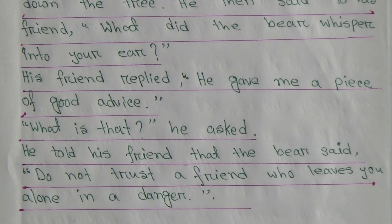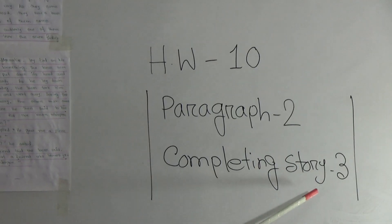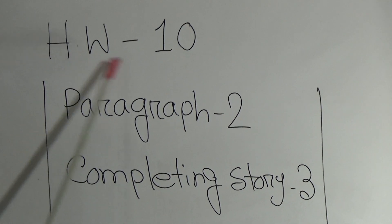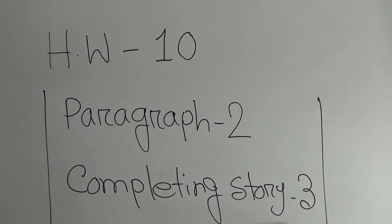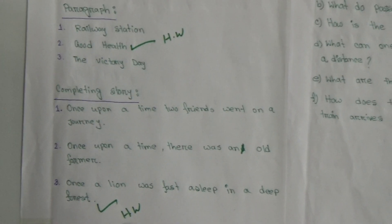So my students, this is our today's topic. Your writing part Half Yearly syllabus includes Paragraph 1, 2, 3 and Completing Story 1, 2, 3. Today's topic was Paragraph 1: Railway Station and Completing Story 1. Your homework: Paragraph 2 and Completing Story 3 will be your homework.